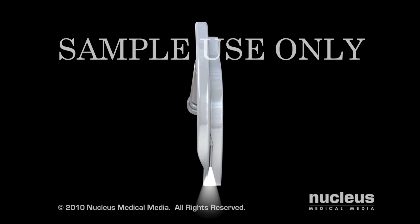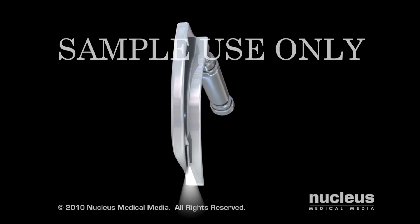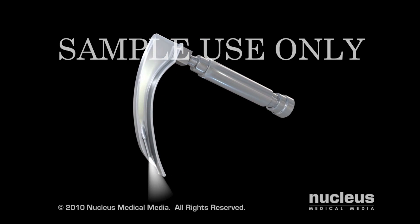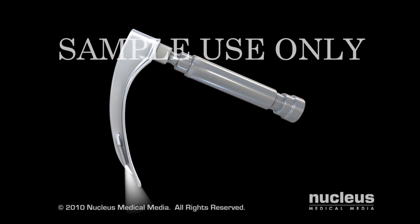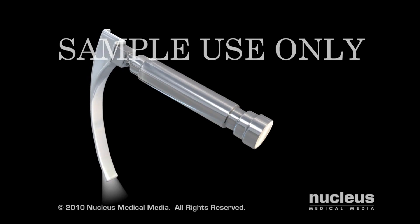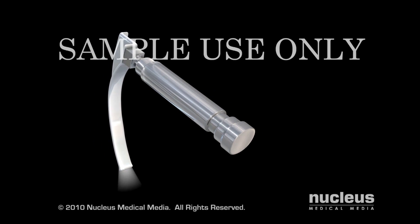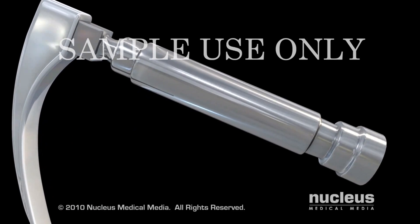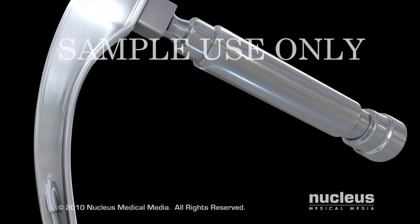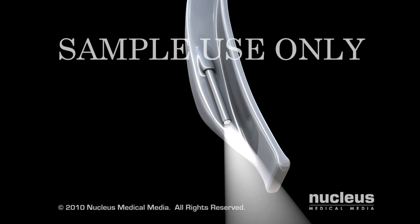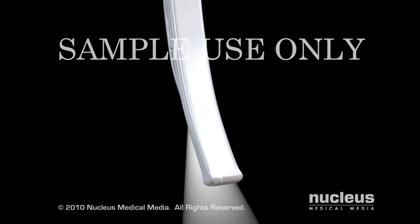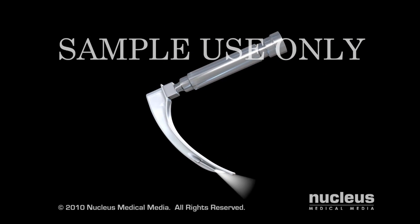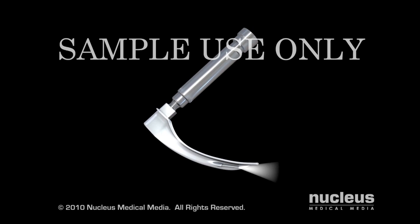The first step in mechanical ventilation is called endotracheal intubation. Once you are asleep, your doctor will use an instrument called a laryngoscope to perform the intubation. A laryngoscope, which consists of a handle, light, and dull blade, helps guide the endotracheal tube to its proper position.